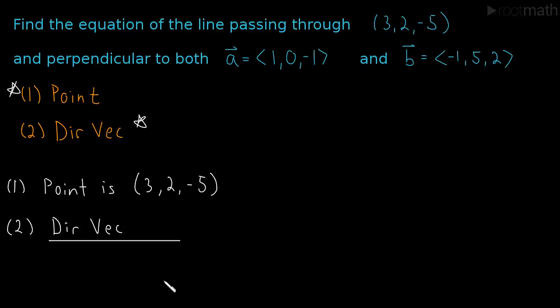Before I do that, let me just say once you know the point and the direction vector, the last thing that you do is you just use the general equation of a line, which is R equals R0 plus a scalar variable T, stands for time, times your direction vector. This R0 is a position vector for your point.